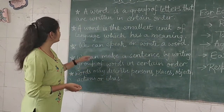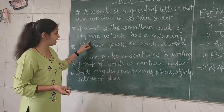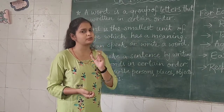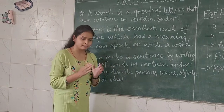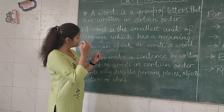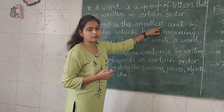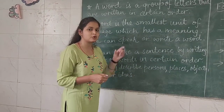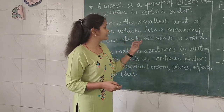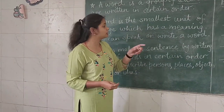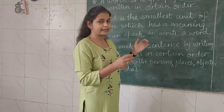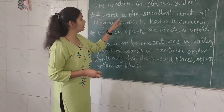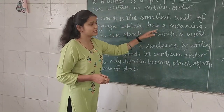Is that clear? Now coming to the next point: a word is the smallest unit of language which has a meaning. Koi bhi ek word sabse chhoti unit hai language mein jo ek meaning banata hai. Like, the word 'smallest' — ye ek chhota sa word hai, lekin ye ek meaning bana raha hai. Smallest ka matlab hai chhota. Hume pata chala ki 'smallest' ka meaning chhota hai because we combined some letters and found the word 'smallest'. So a word is the smallest unit of language which has a meaning.